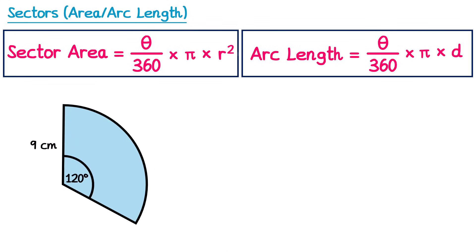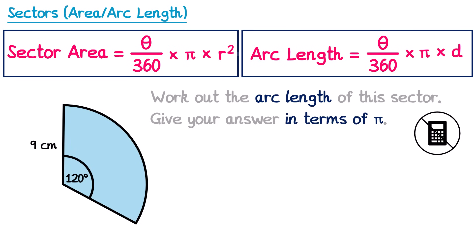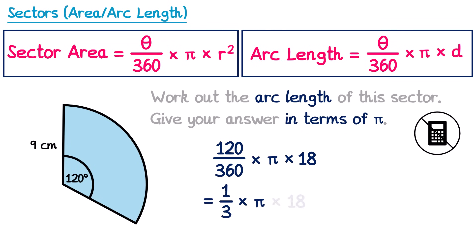Sticking with this sector, we can also work out its arc length, once again giving our answer in terms of pi — so no calculator for this question. Using the arc length formula, the angle is 120 and the diameter is double 9, which is 18. Once again the fraction simplifies to 1 over 3, then times pi, then times 18. Reordering: 1 third times 18 times pi. One third of 18 is 6, so it's 6 pi centimetres.